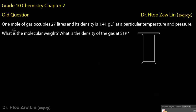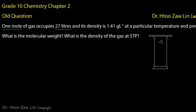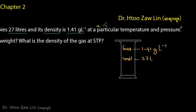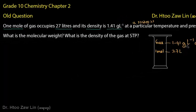The density of the gas is 1.41 gram per liter at the given temperature and pressure. What is the molecular weight?